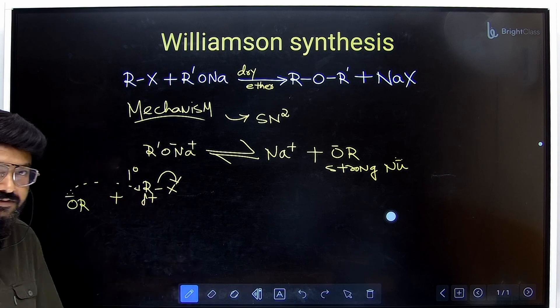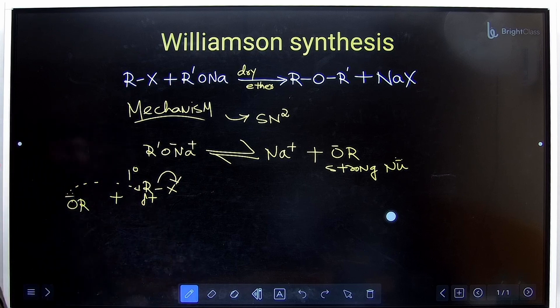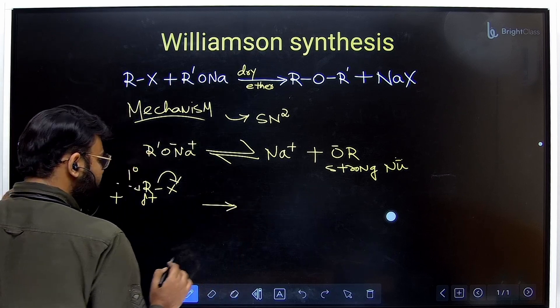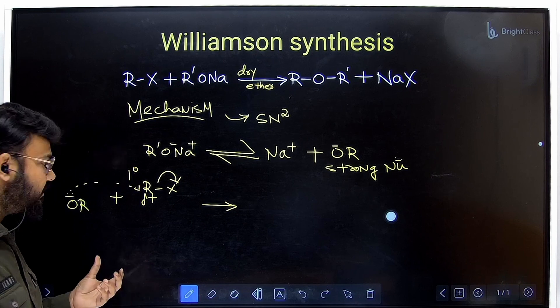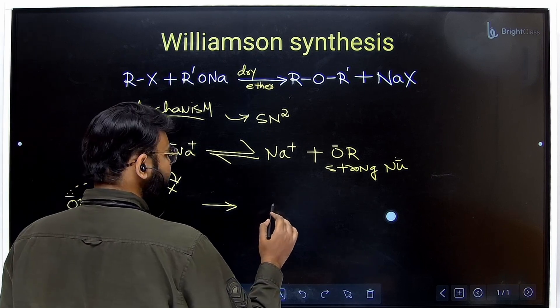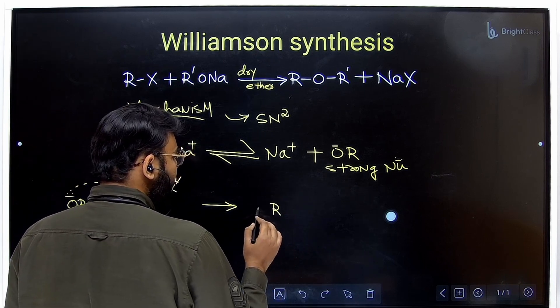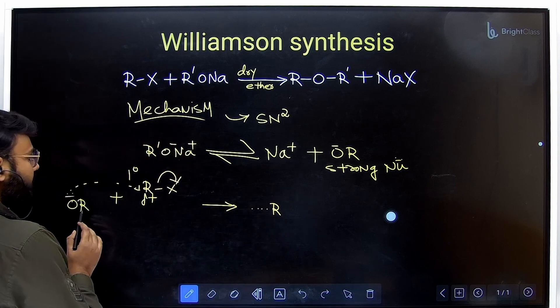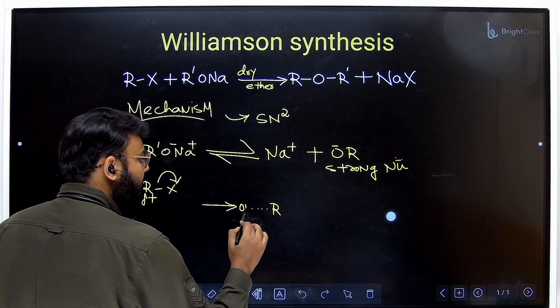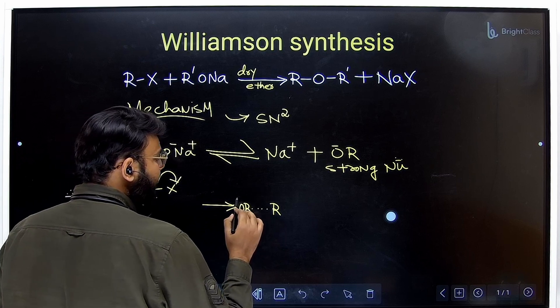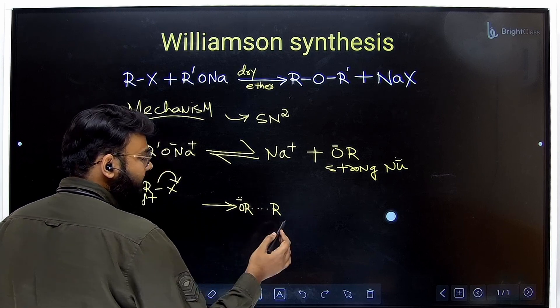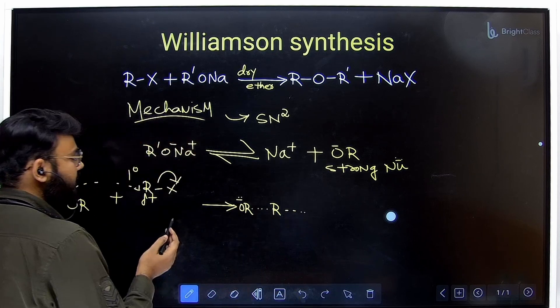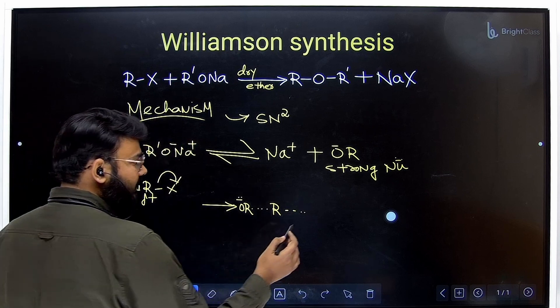So when the bond will break, at the same time this bond will be joining because we can see there will be a partial positive charge will come up, so it will go through a transition state. So how do we show the transition state? In our transition state you will see at a time the nucleophile is attacking and at the same time the old nucleophile, the halogen, is leaving.